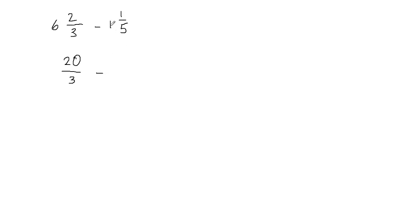The same thing we're going to do with the second mixed fraction. We have to convert it into an improper fraction. I multiply my whole number with the fraction's denominator: 1 times 5 gives me 5, then I add 5 to my numerator, so 5 plus 1 gives me 6. My numerator is 6 and the denominator stays 5.